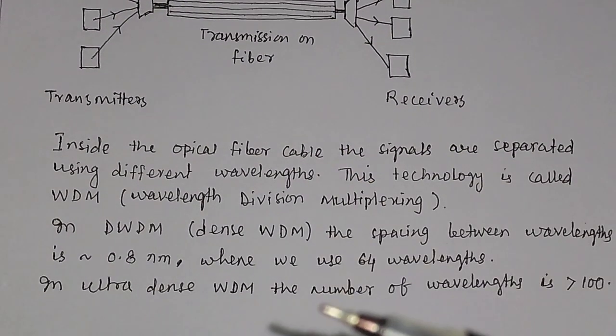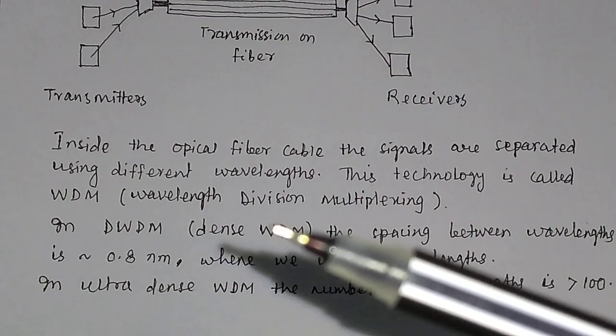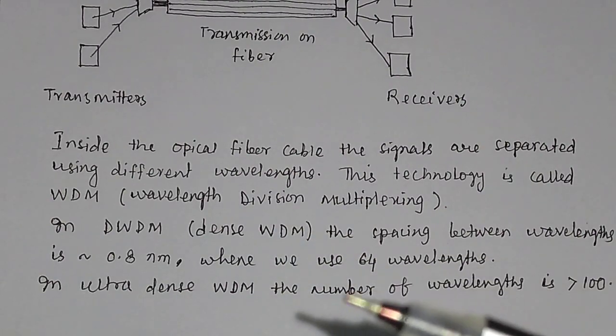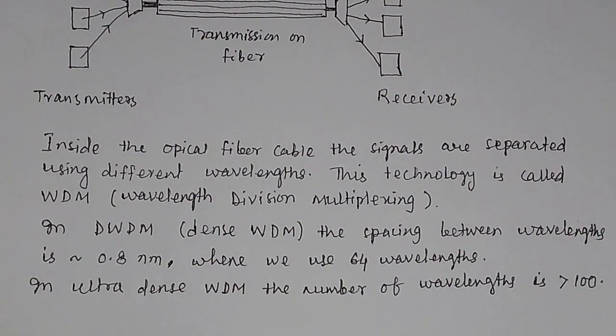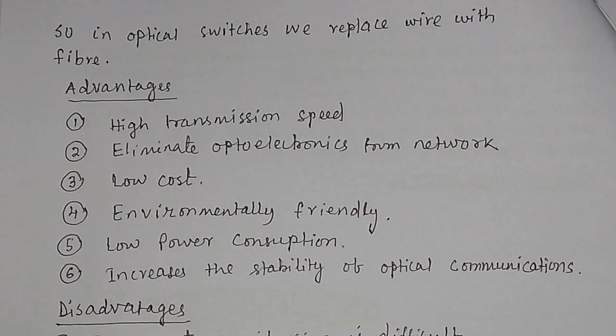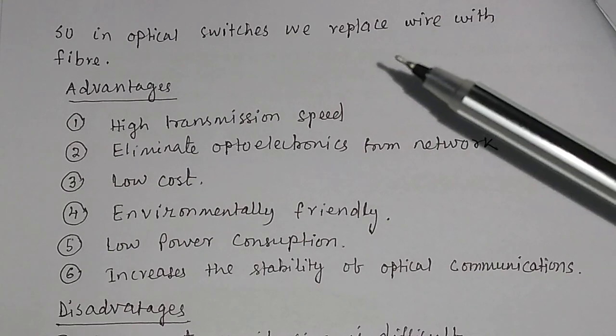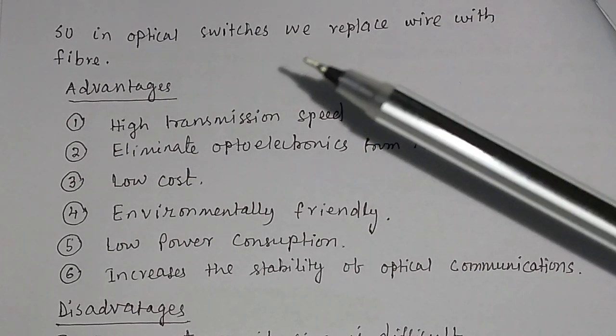Similarly, if you have ultra-dense wavelength division multiplexing, then the number of wavelengths is greater than 100. So, in optical switches, we replace wires with fiber.